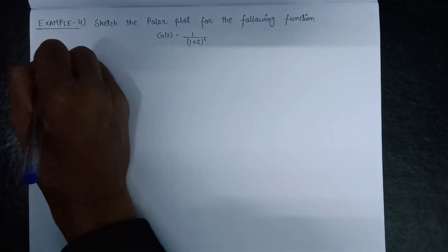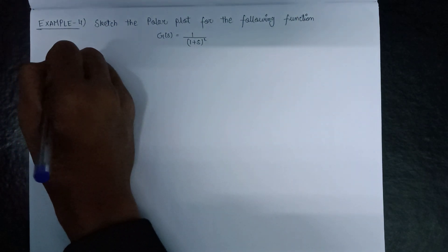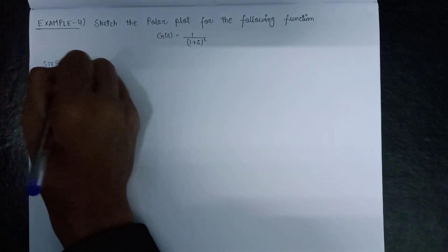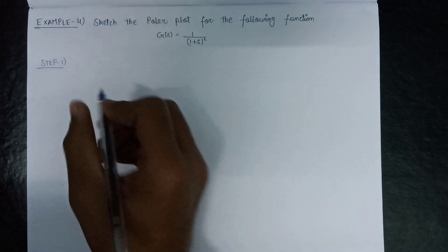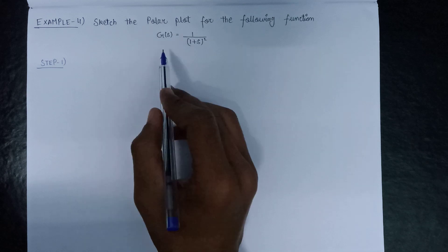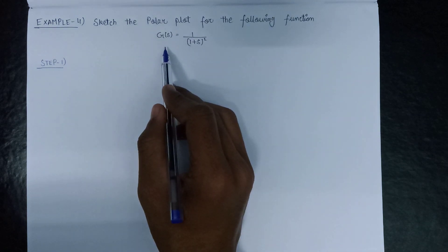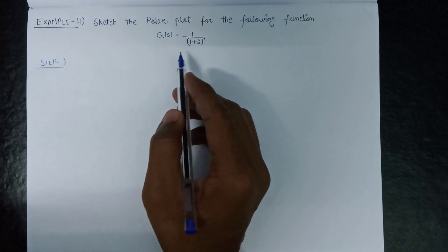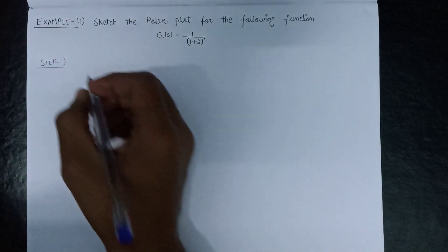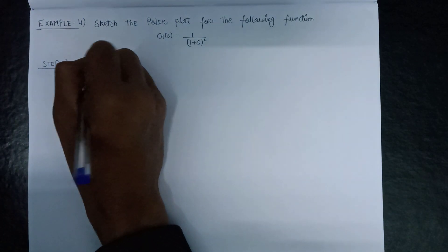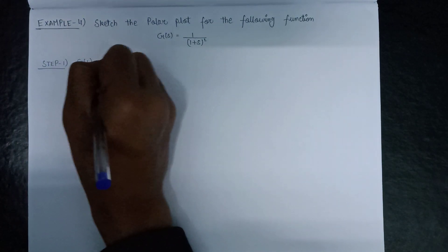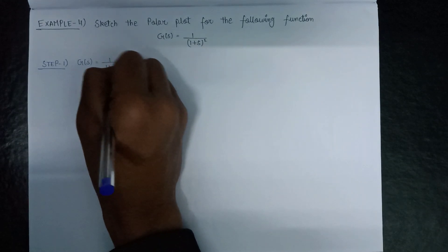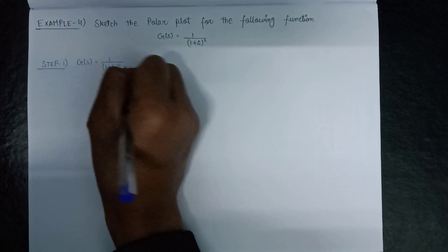We have to follow all 5 steps to plot a polar plot. The first step is determination of the open loop transfer function, that is G(s). Since G(s) is already given in the question, our open loop transfer function is equal to 1 over (1 + s²).